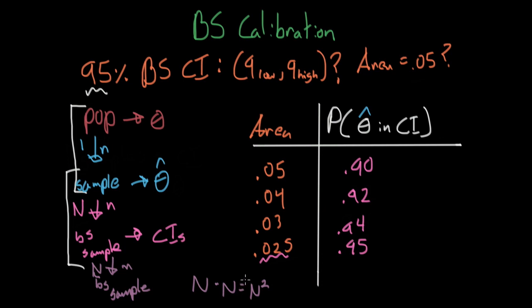If this were 1,000, we'd now be taking 1 million samples, which would take a really, really long time. So, with a lot of power, in this case bootstrap calibration, comes great computational cost.